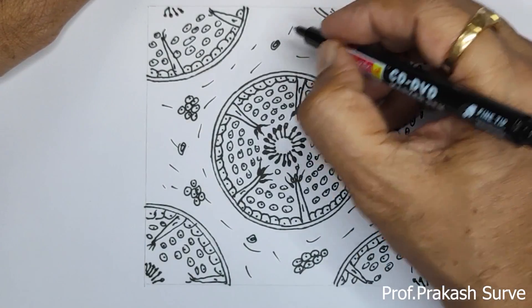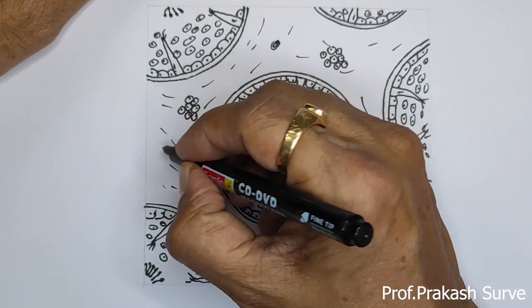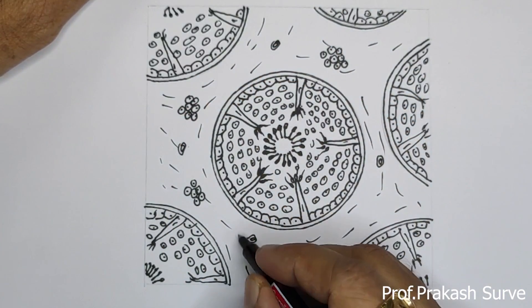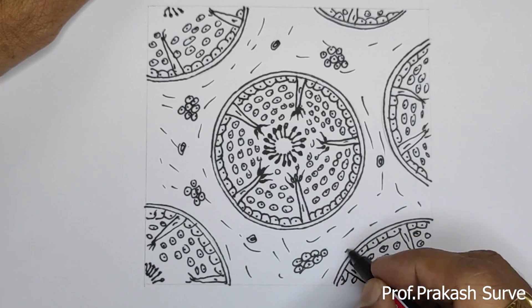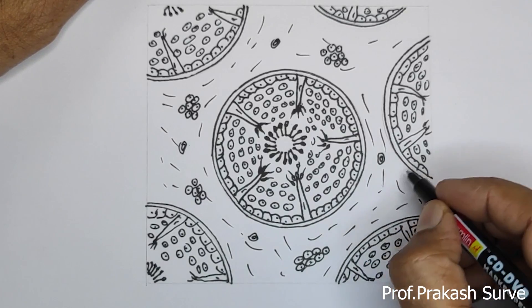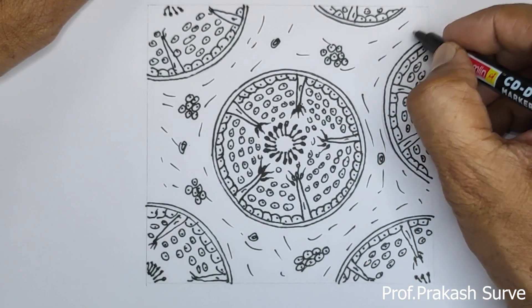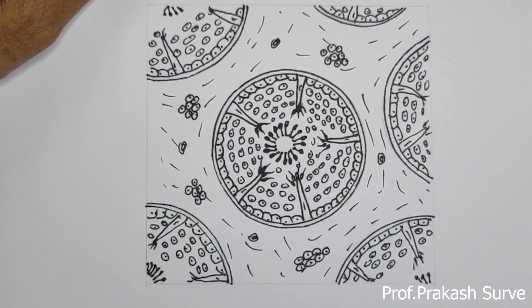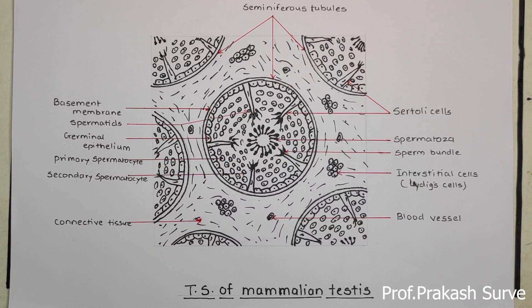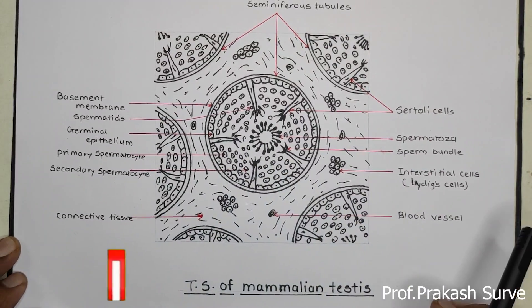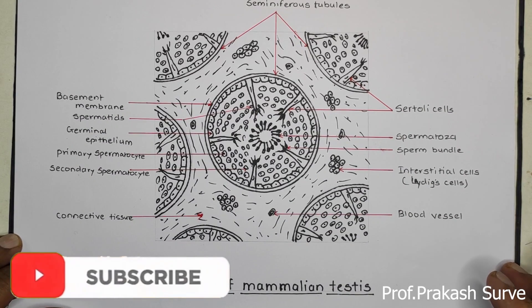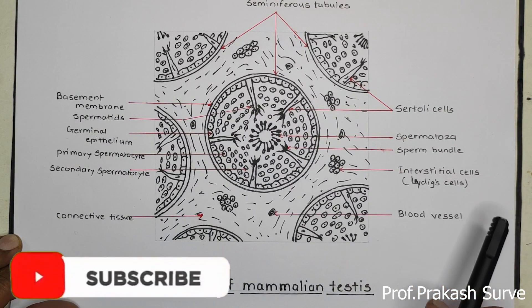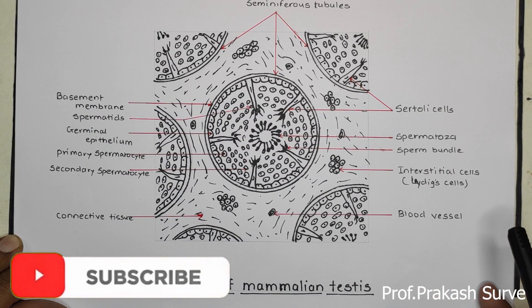This way we have finished the TS of testes, that is about the transverse section of the mammalian testes. We have finished this diagram of TS of testes with the complete labels. If you like my channel, please subscribe and share with your friends.